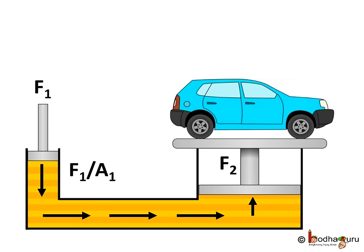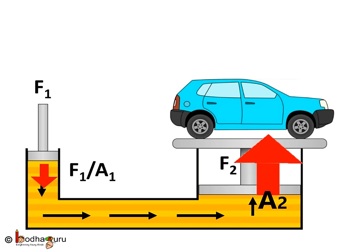Now, in case you have not noticed, the upward force applied on the second tube or the second piston is A2 over A1 times the force we applied on the smaller tube or the piston. So, we see force gets multiplied many times.